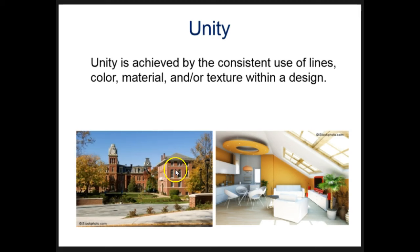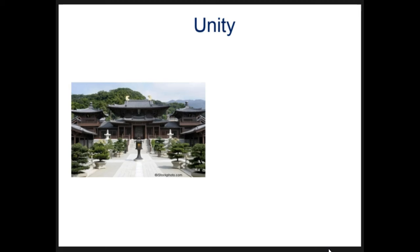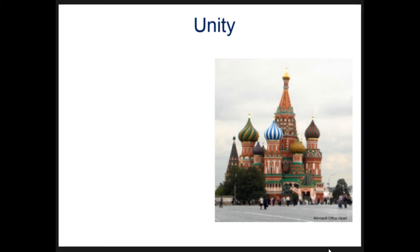Finally, we have unity — unity is when there is consistent use of lines, color, material, or textures. In this college campus, what has been repeated so these buildings look like they belong together? In this room, do you see shapes or colors that have been repeated? In these buildings we saw earlier for symmetry, what elements were repeated to create a sense of unity?